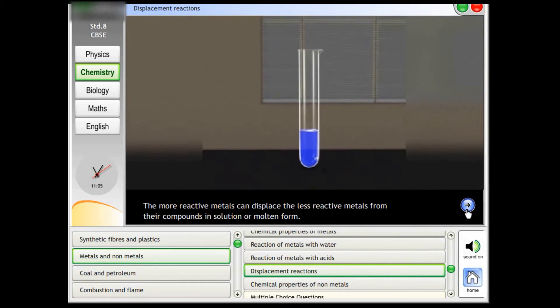Displacement Reactions. The more reactive metals can displace the less reactive metals from their compounds in solution or molten form.